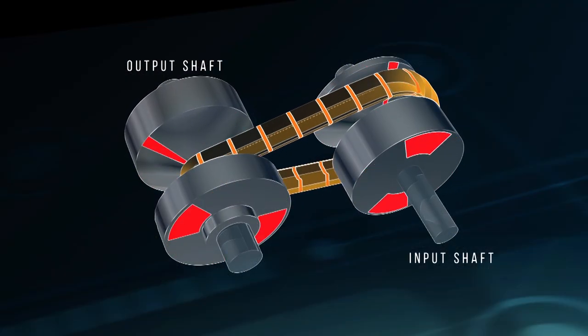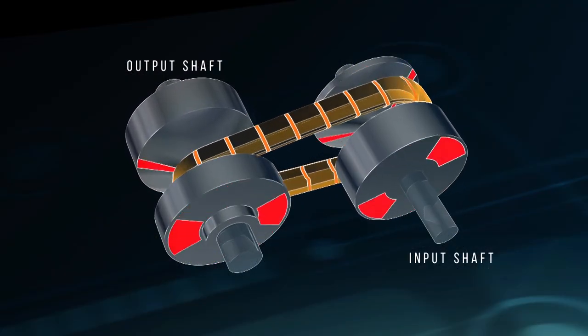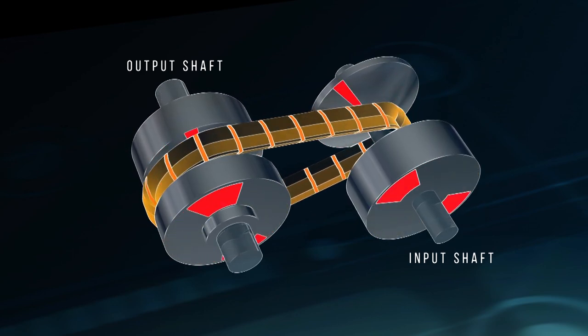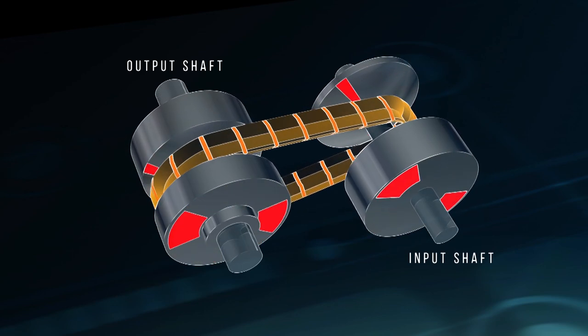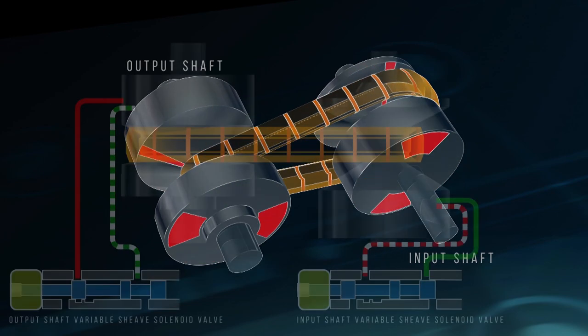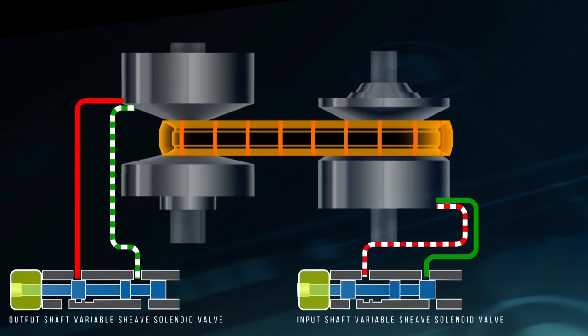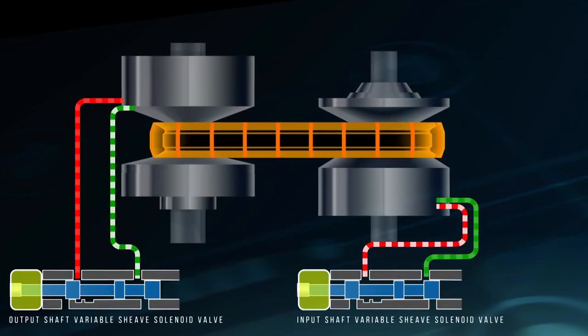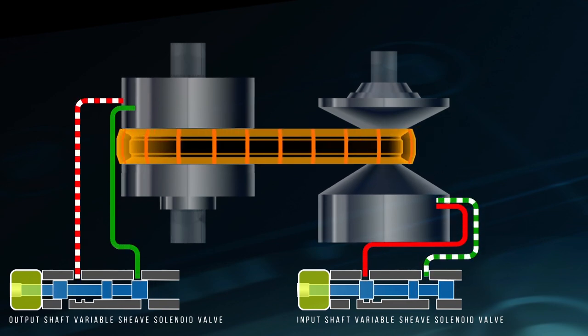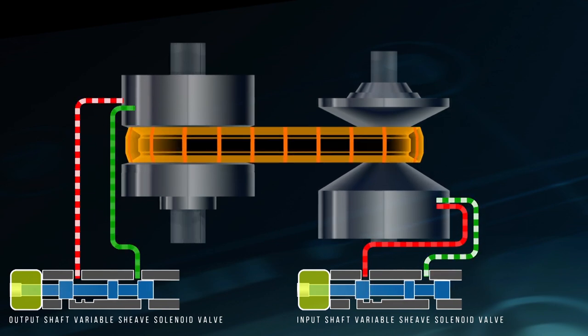A CVT uses a stepless arrangement that continuously adjusts its available ratios to suit the immediate vehicle driving conditions. When commanded by electronic control, the hydraulic system opens and closes variable sheaves, thus giving the ability of an infinite gear ratio.